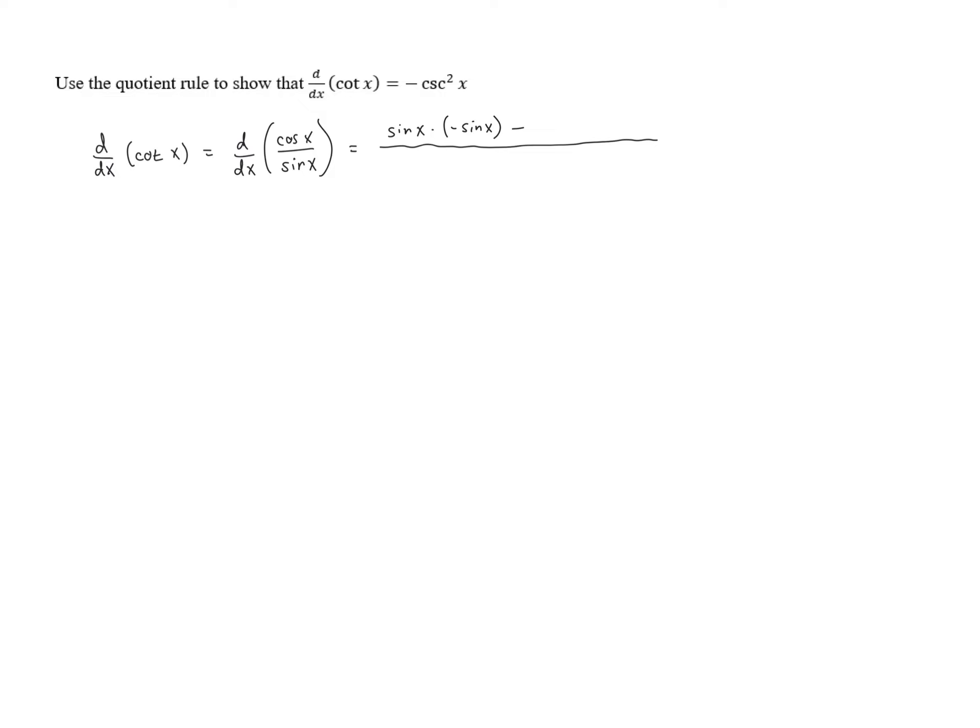So that's our low d high minus high d low. The higher function is cosine of x times the derivative of the lower function. Derivative of sine is cosine of x. All over low squared, that is going to be sine squared of x.